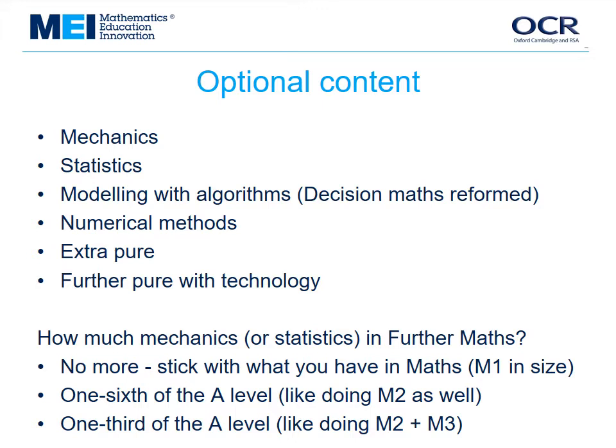There's more choice: how much mechanics or statistics do you want to offer? You could stick with the compulsory mechanics in A-Level Maths — like doing M1 and no more in Further Maths. Or you could do some more, like M2 as well, or a lot more, like M2 and M3. MEI thinks the right amount is offered to give you flexibility.